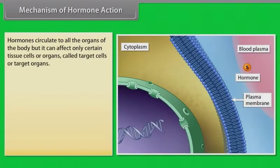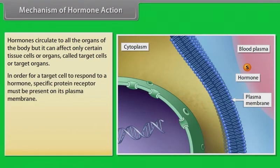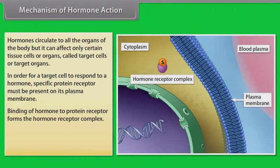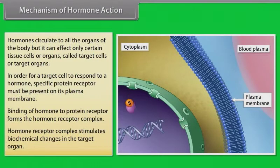Hormones circulate to all the organs of the body, but can affect only certain tissue cells or organs called target cells or target organs. In order for a target cell to respond to a hormone, a specific protein receptor must be present on its plasma membrane. Binding of the hormone to the protein receptor forms the hormone-receptor complex, which stimulates biochemical changes in the target organ.